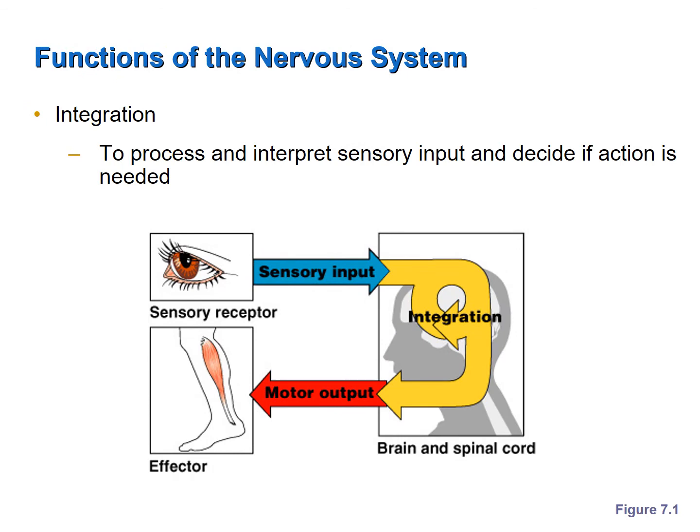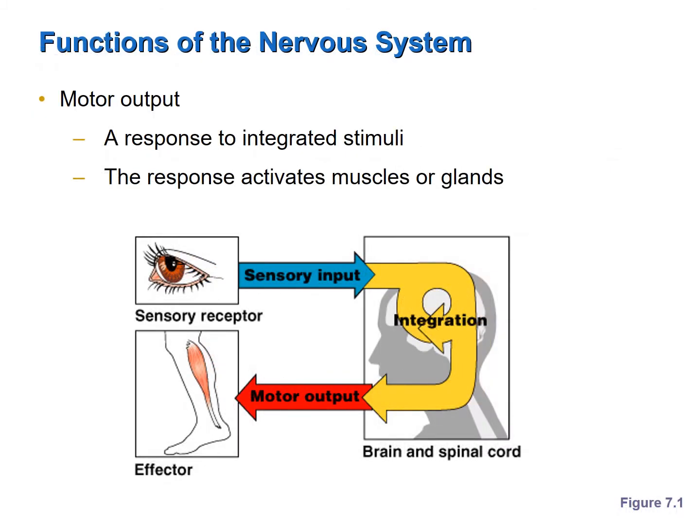After receiving that information, the integration center — usually the brain and the spinal cord — processes and interprets that information, determining what those changes mean. After processing and interpreting that sensory input, the integration center then decides whether or not an action is appropriate, and if an action needs to be taken, commands are sent out as motor output to an effector.